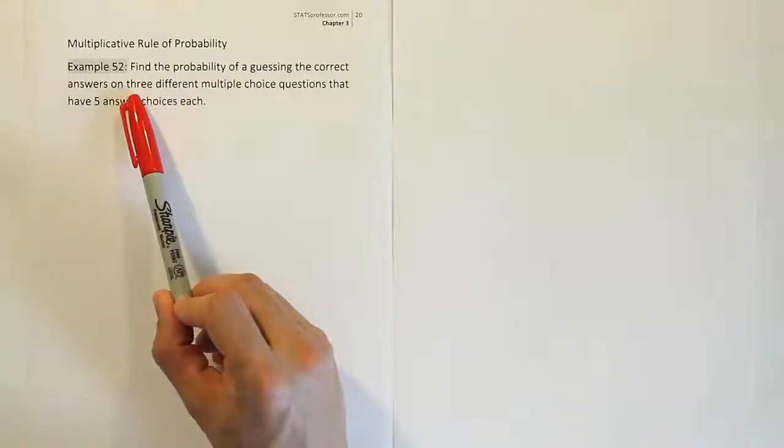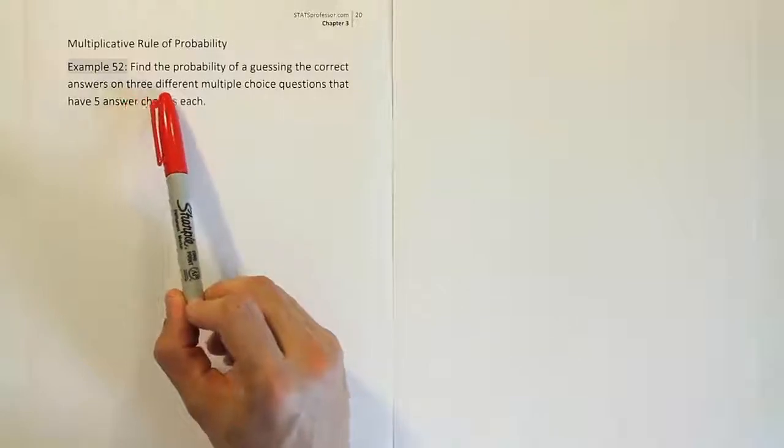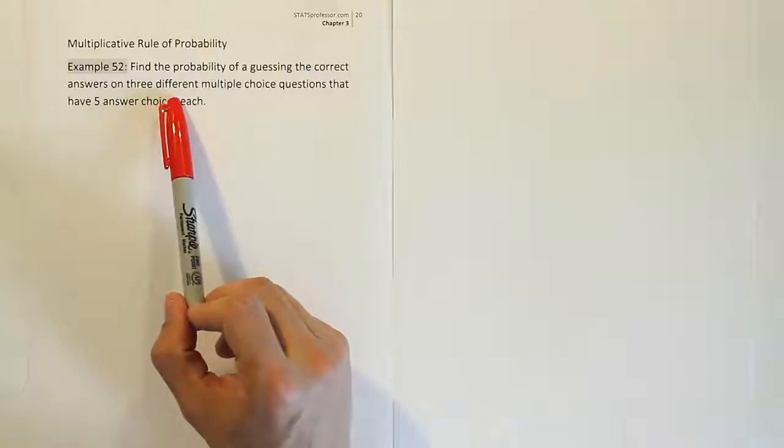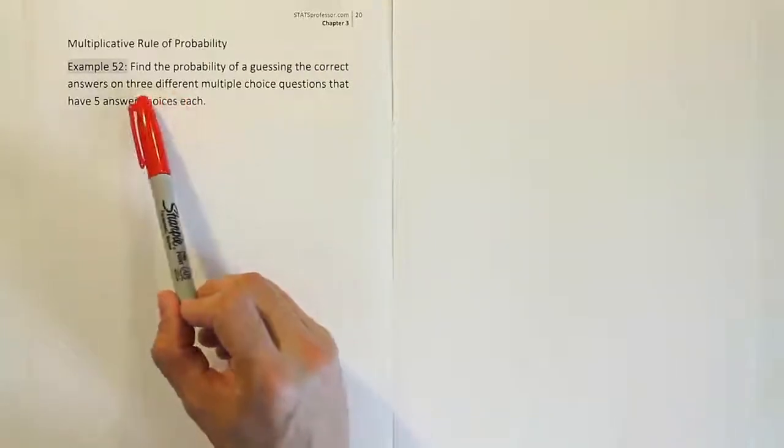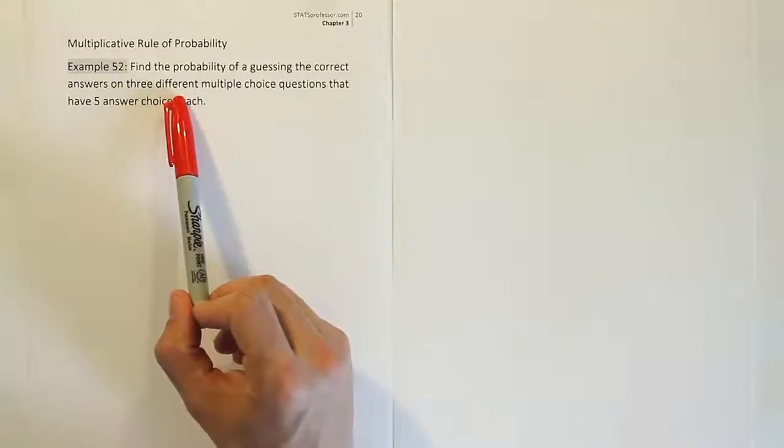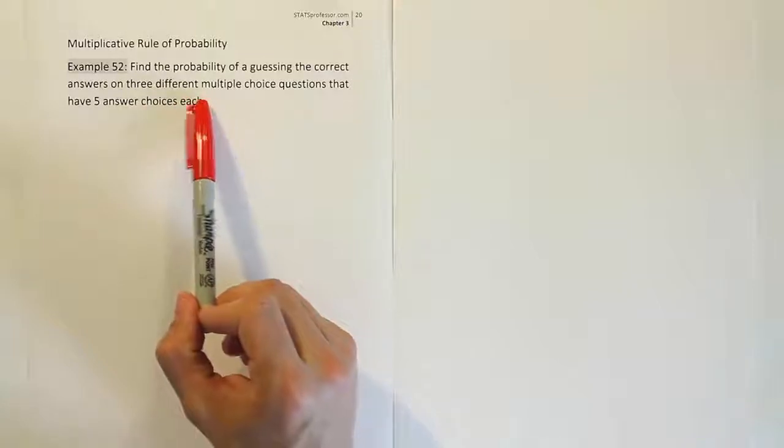Well, if you look at the problem here, it says we're taking guesses on three different multiple choice questions. If you're taking a guess on one question, that's only one event, the event of selecting one answer choice for that one question. But when you're guessing on three questions, there are three separate events. You take an answer choice for the first one, one for the second question, and one for the third question.